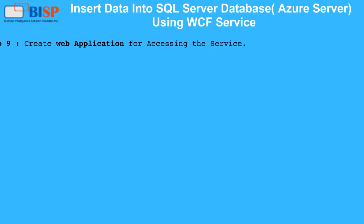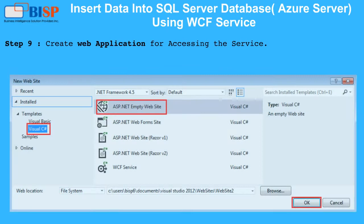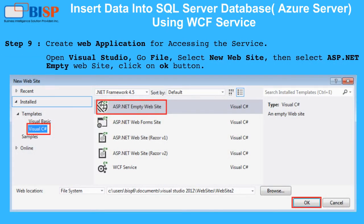Step 9: Create a web application for accessing the service. Open Visual Studio, go to File, select New Website, then select ASP.NET Empty Website, and click the OK button.